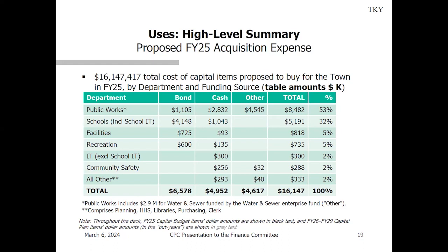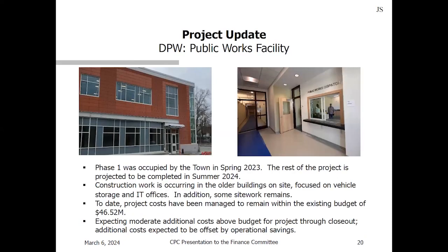Joe Solomon presented on public works. The DPW new facility: phase one of new buildings is largely complete and occupied by many departments. The goal is to have the project wrapped up later this year. Work is moving into older buildings focused on vehicle storage, IT offices, and site work. To date the project is at its current budget of just over $46 million. As work gets into older buildings there is some expectation of minor additional costs, but there is no additional ask for capital budget money as it will be offset by operating surplus.